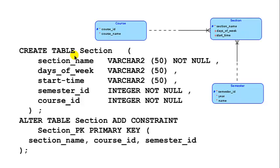What about the primary key for section? It is created the same way: ALTER TABLE section, ADD CONSTRAINT. The constraint name is 'section_pk', and we define a primary key with the fields: section name, course ID, and semester ID.